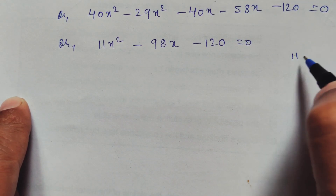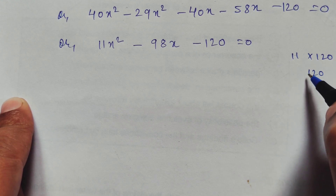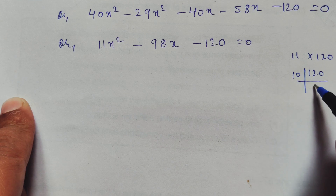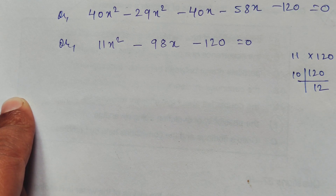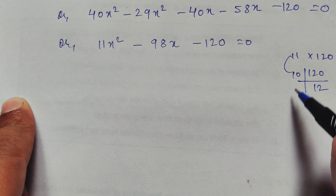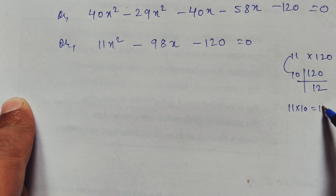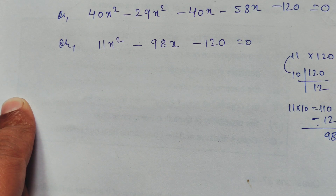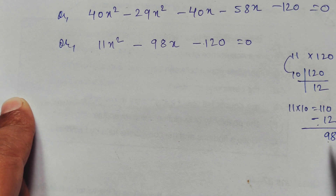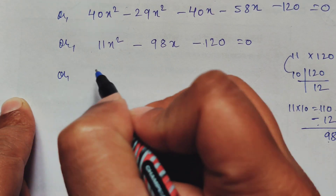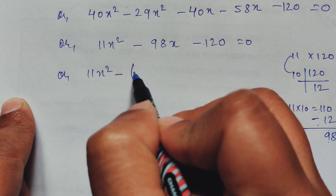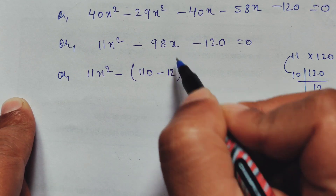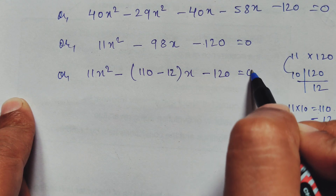To factorize 11x squared minus 98x minus 120 equals 0, we need two numbers that multiply to 11 times 120, which is 1320, and add to minus 98. Breaking 120 as 10 times 12: 11 times 10 is 110, and 12, so 110 minus 12 gives 98. The signs work out as minus 110 and plus 12. So we split the middle term as minus 110x plus 12x.